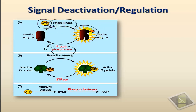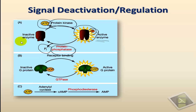From G-protein-linked receptors, the second messenger cyclic AMP activates protein kinase as its first target. Protein kinases transfer a phosphate from ATP to a protein, raising its potential energy and causing the enzyme to become active. This pathway can be deactivated by the activity of phosphatases, which by definition remove a phosphate from a protein or substrate, releasing it as inorganic phosphate, thereby deactivating the enzyme.